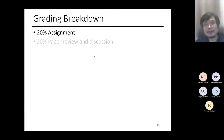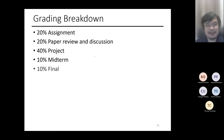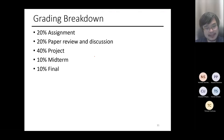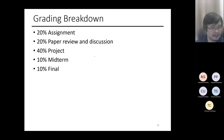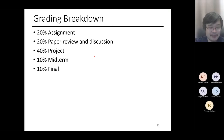Grading breakdown: 20% lab assignments, 20% paper review and discussion, 40% project, 10% midterm, 10% final. The reason for this breakdown is I want to emphasize your project. By default, most of you get full credit on the project unless you submit late. The paper review, unless you do something really sloppy, you also get that 20%. The lab assignments and midterm and final will give you enough room to decide how you want to weigh that.